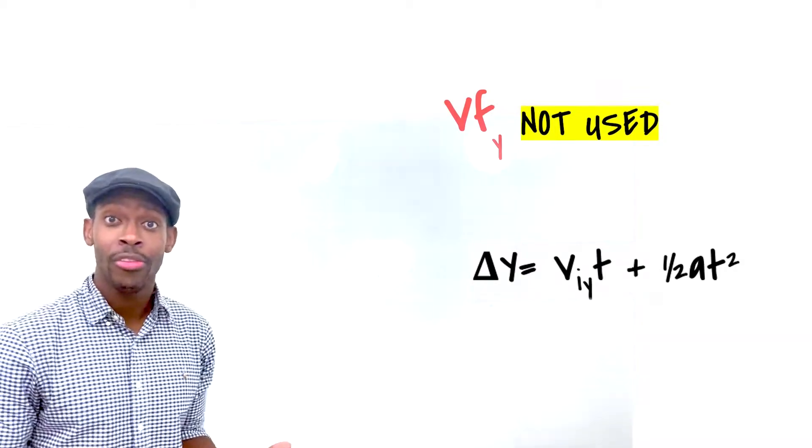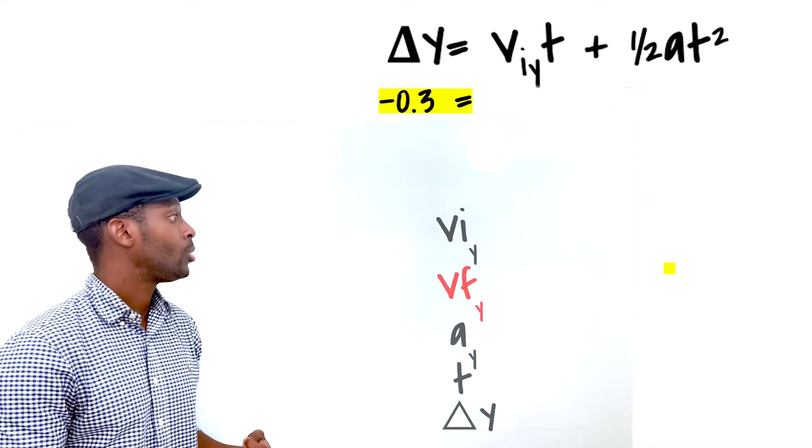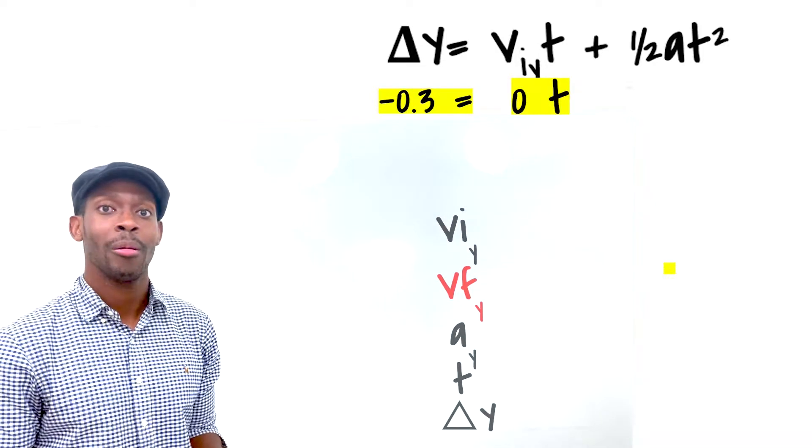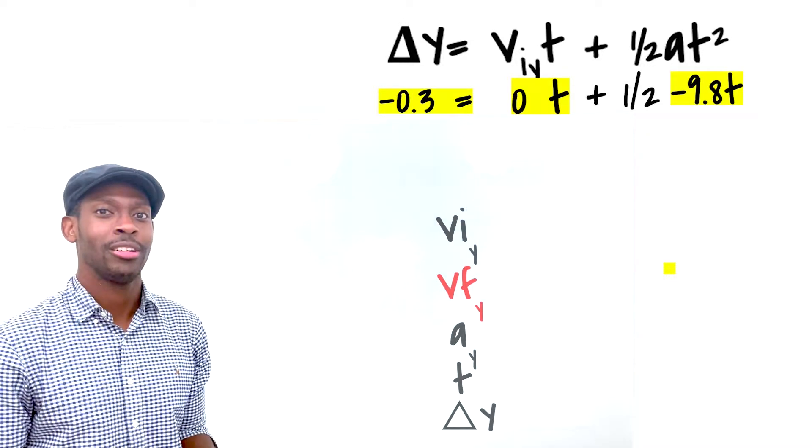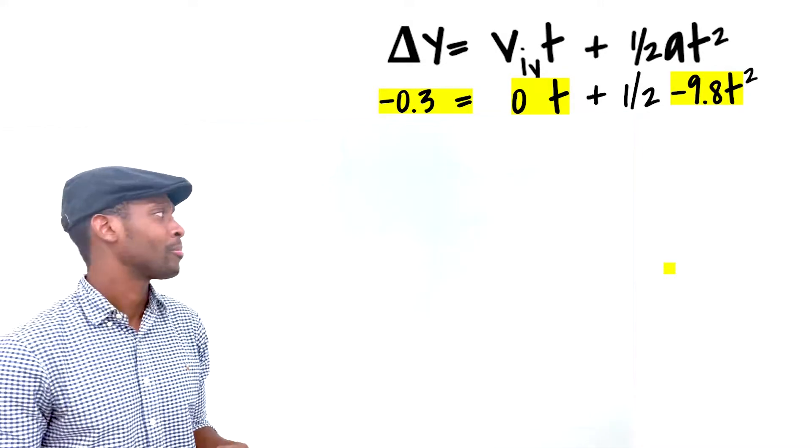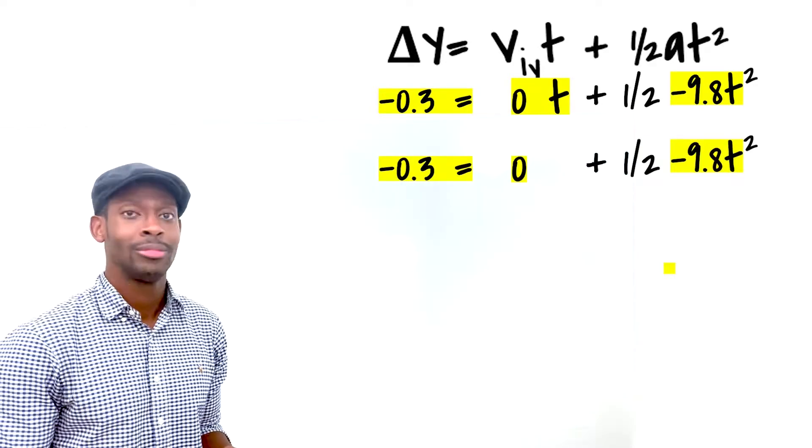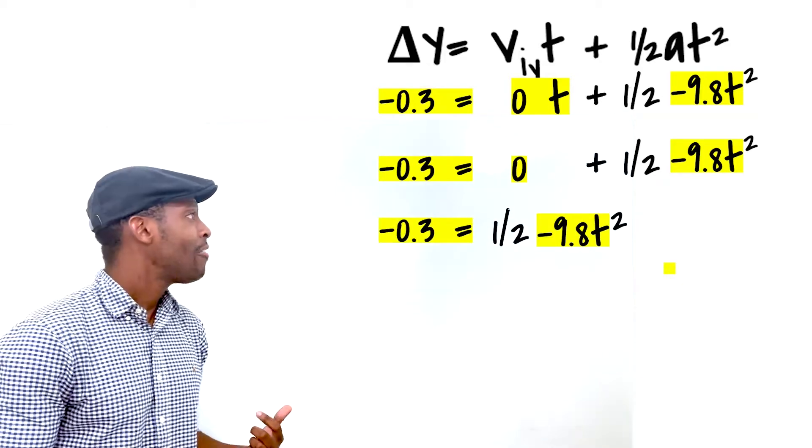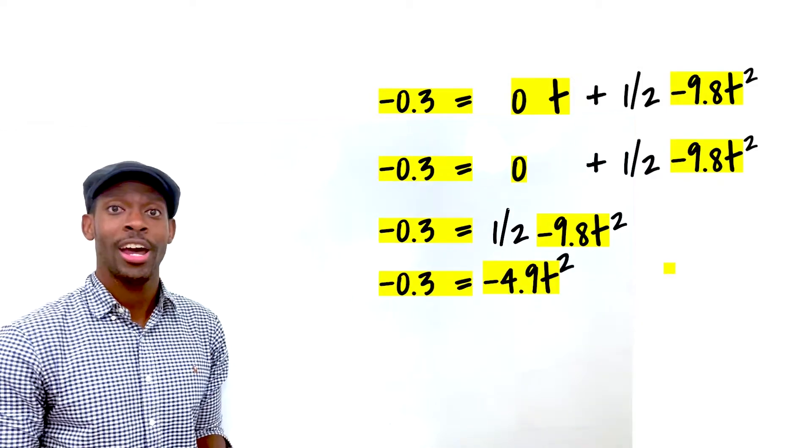This should be negative 0.3 is equal to zero times t plus one half of negative 9.8 times t squared. Let's just do the basic math. Zero times anything is zero. Zero plus anything is anything. Half of negative 9.8 is negative 4.9.